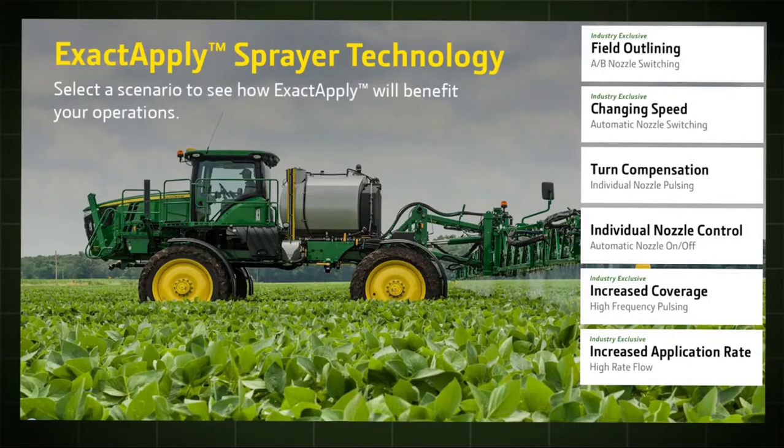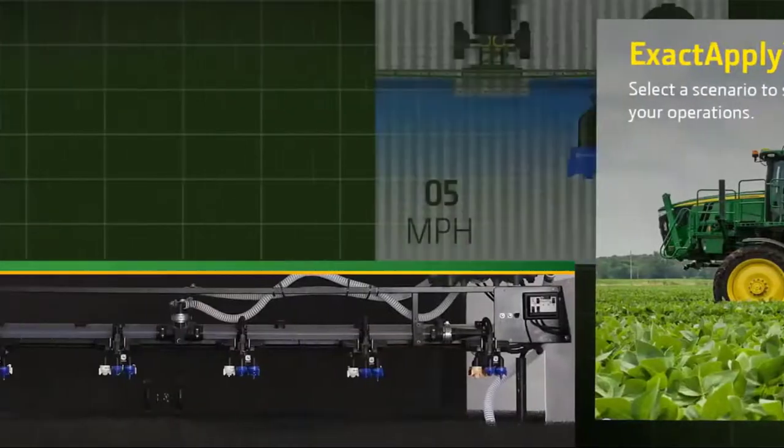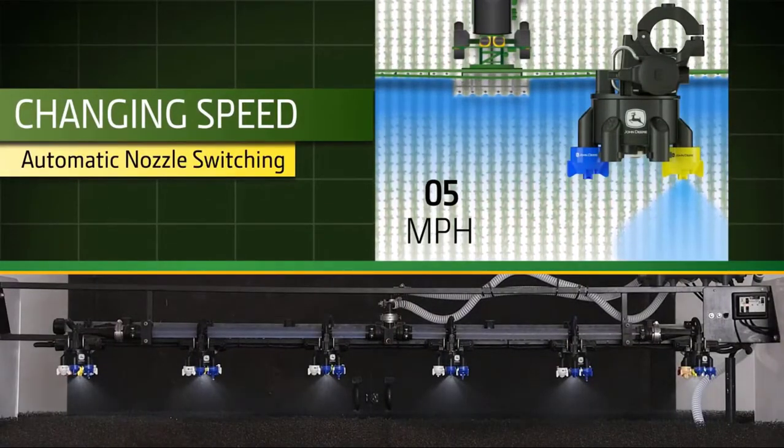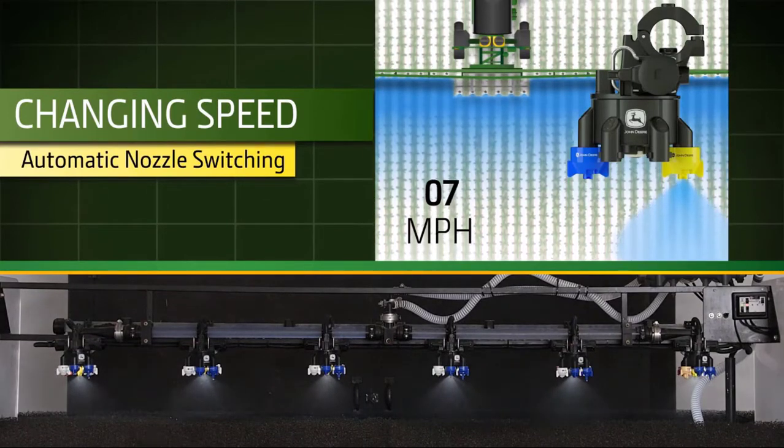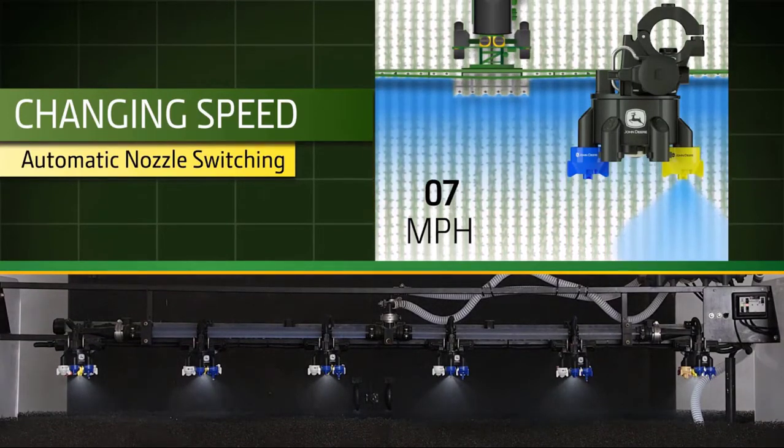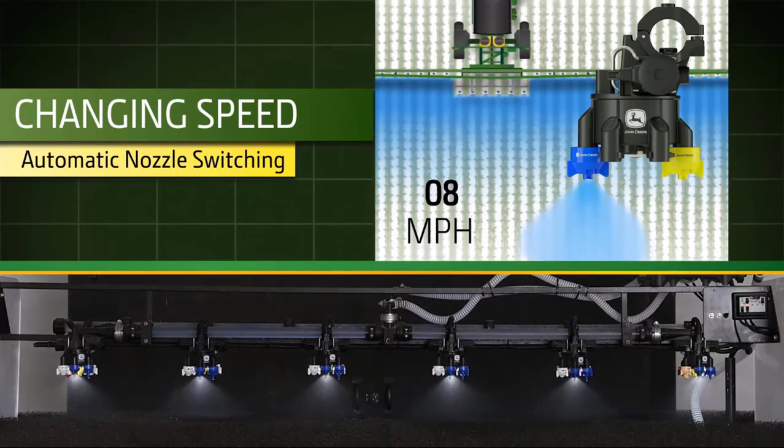Our next example is around that automatic nozzle switching. This feature is an industry exclusive and you'll see that we're able to maintain a target rate while changing ground speeds. In this example, we're going to talk through that auto select feature, which automatically switches nozzles from A to B to maintain a target application rate while varying ground speeds.